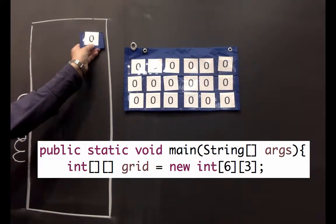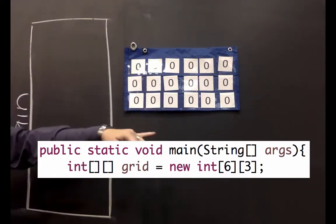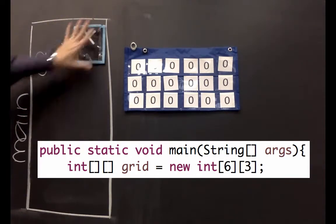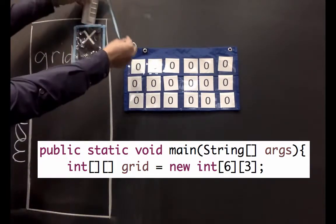Remember when we make an int variable it always starts with zero. Same thing with an array. They always start with zeros. So here I'll give it the variable name grid, and the variable can hold a reference and then the reference references that grid.